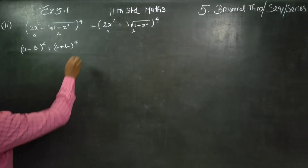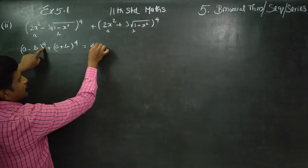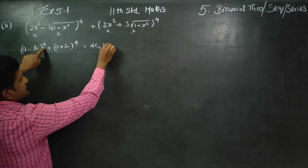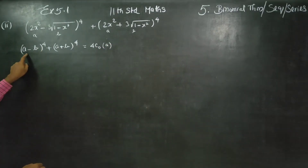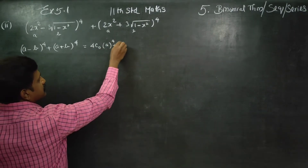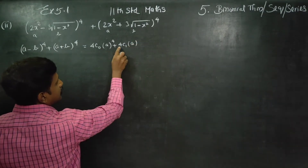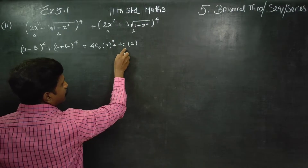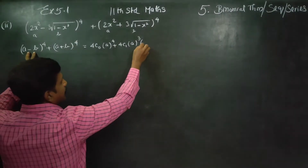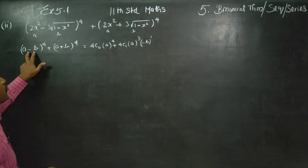I am going to use the binomial theorem. For (a minus b) whole power 4: starting with 4C0 times a to the power 4, plus 4C1 times a to the power 3, times (minus b) whole power 1.